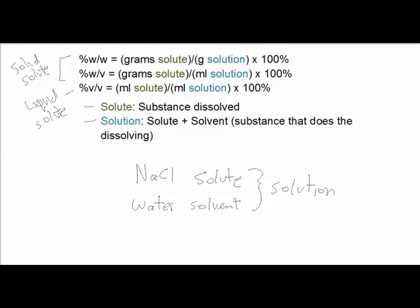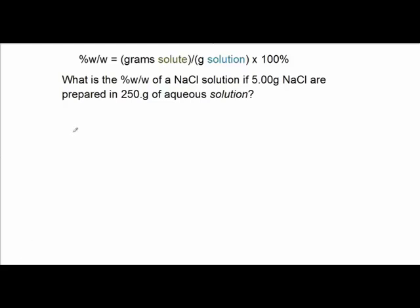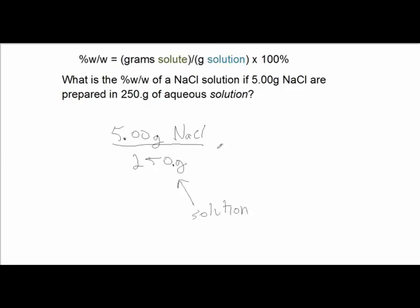Now I'd like to present a few problems using each of these percent concentrations. What is the percent weight-weight of sodium chloride solution if 5 grams of sodium chloride are prepared in 250 grams of aqueous solution? We simply plug in the numbers to the definition: 5 grams of solute divided by 250 grams of solution times 100%. This gives a 2% sodium chloride weight-per-weight solution.